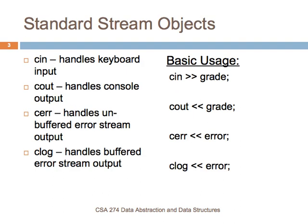The standard stream objects that are part of the Iostream library are Cin, Cout, Cerr, and Clog, and the basic usage is shown here on the right. Cin handles keyboard input. One thing to note is the direction of the arrows used for reading in and writing out. The Cin operation points the arrows to the right, and Cout points the arrows to the left. The idea is that the Cin stream is reading some data and writing it to the grade object, which would be a string. With Cout, you're taking the contents of grade and writing it out to the Cout stream. The arrows show the movement of data from the source to the stream or from the stream to some sink.